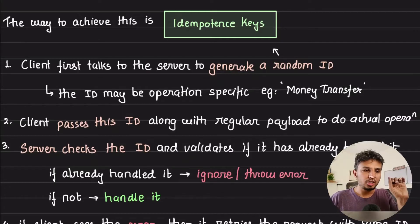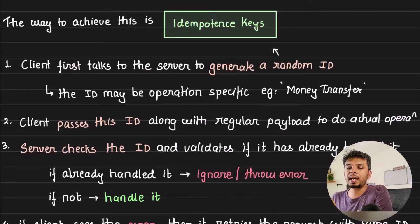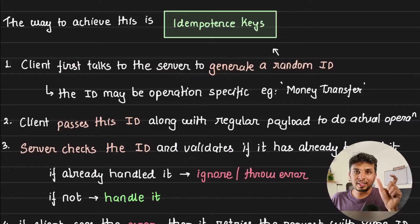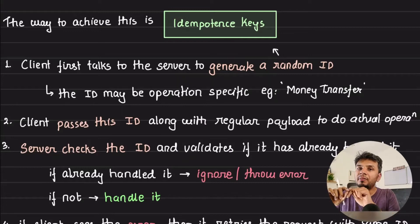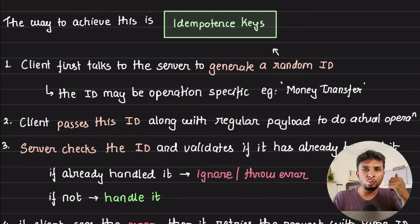Here's how the flow happens: your client before making the actual API call first talks to the server to generate a random ID. This random ID will be the idempotent key that it would need to pass in future requests. Against this random ID your server might store what purpose or what operation the user wants to take - for example, money transfer would be one of the operations you might have. This key and the purpose is something that your server would store in the backend so that the next time the request comes in, the server can validate if it has handled this request or not.